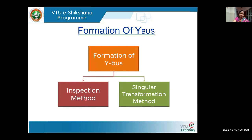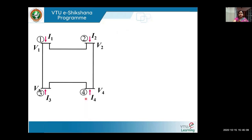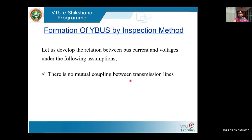In the inspection method, as the name suggests, as soon as you look at or inspect the network, you will be able to form the YBUS directly. This is easier under two assumptions: there is no mutual coupling in the transmission lines, and there are no regulating transformers. Under these two assumptions, you can directly determine the YBUS just by inspecting the network.